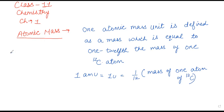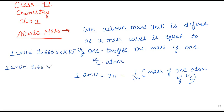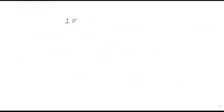अब हमारे पास 1 AMU की जो value है, जो हमारी book में दी हुई है — और अगर हम लोग यहाँ पर hydrogen के साथ इसका calculation देखें — तो यहाँ पर लिखते हैं: 1 AMU is equal to 1.66 into 10 to the power minus 24 gram.